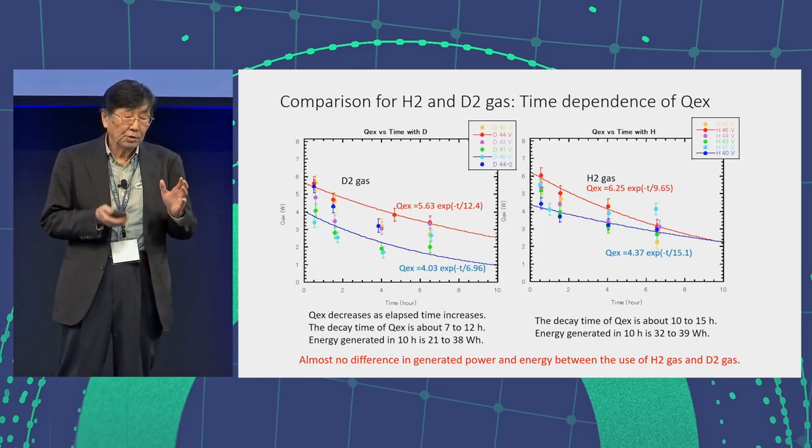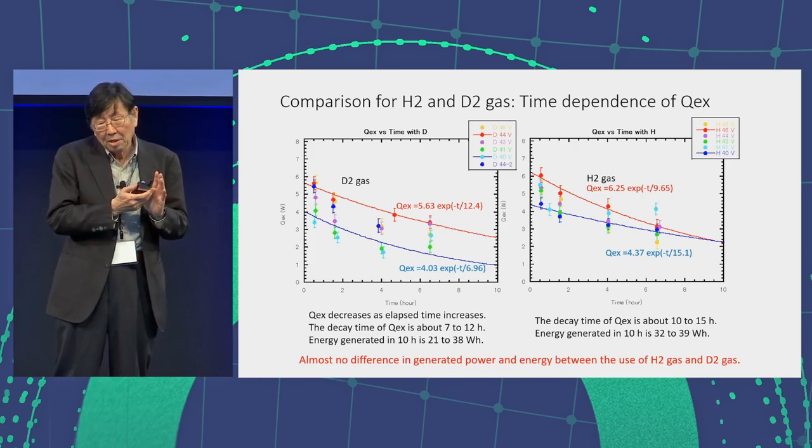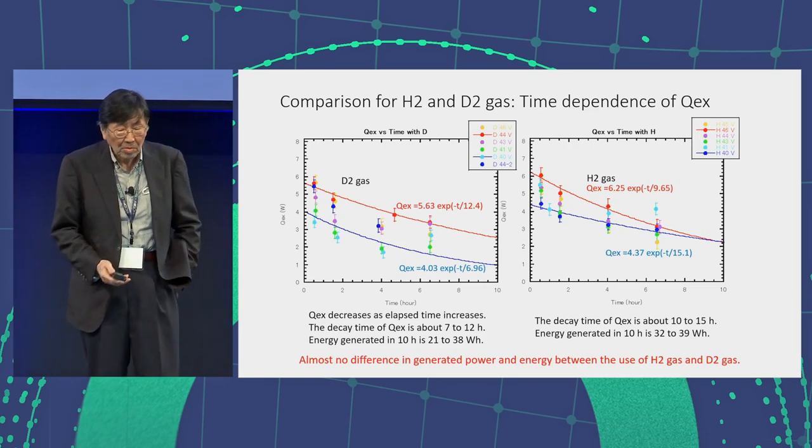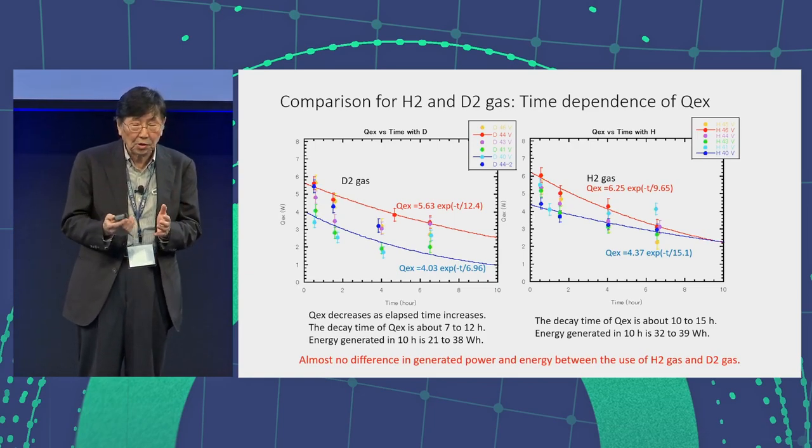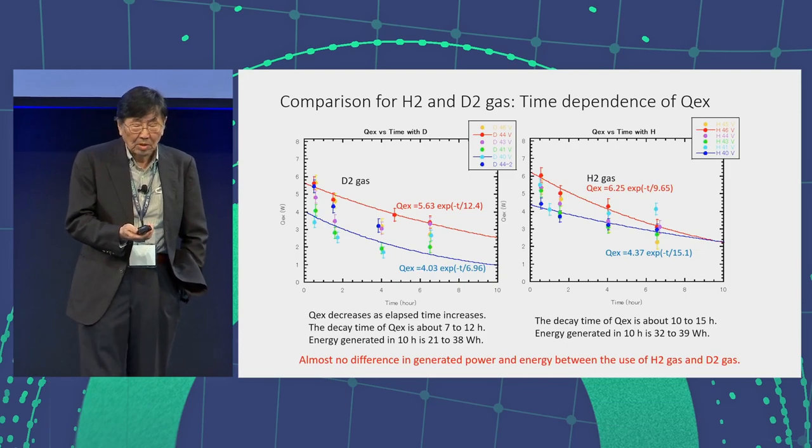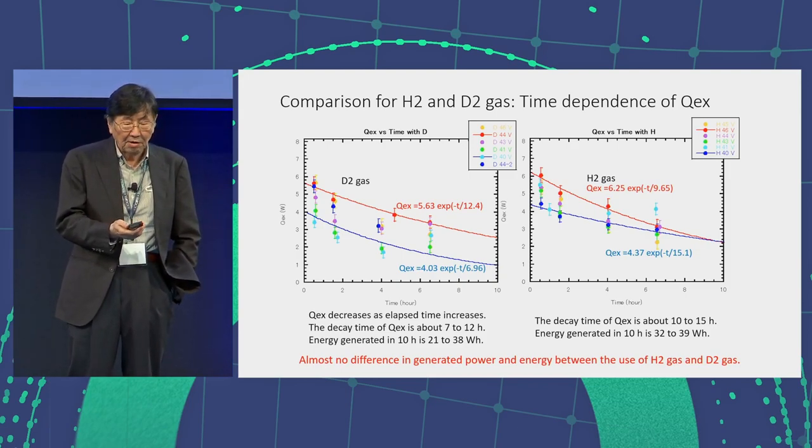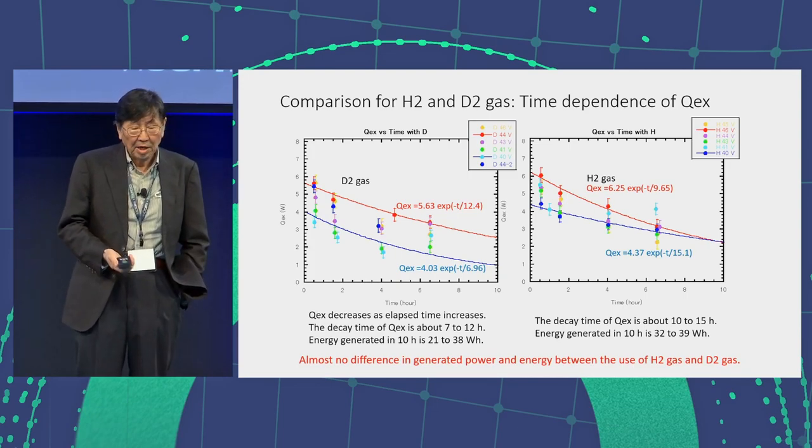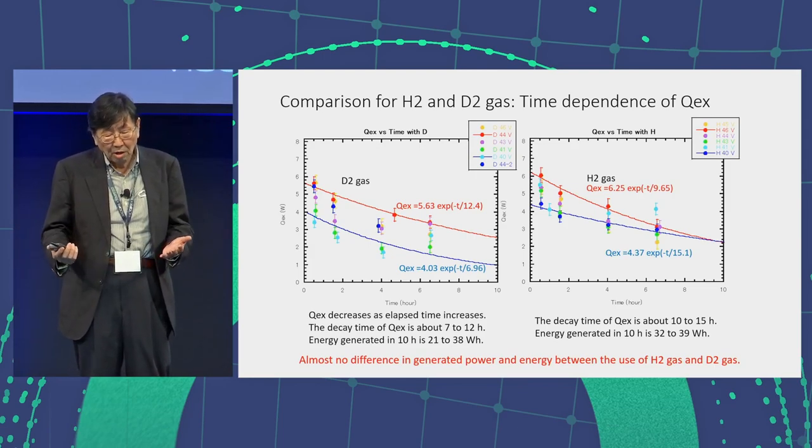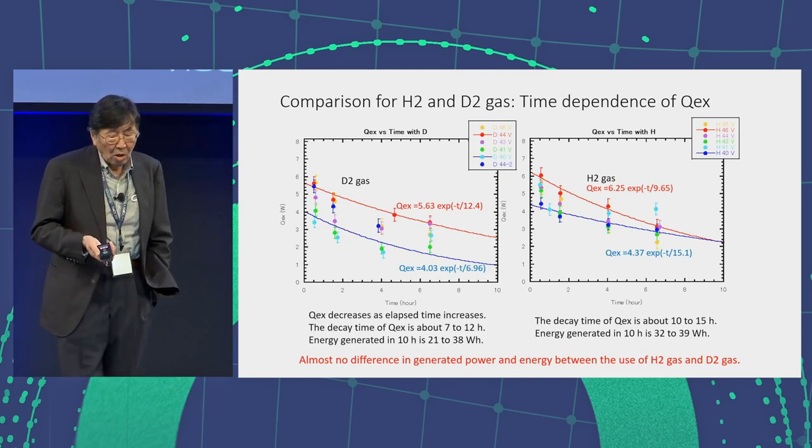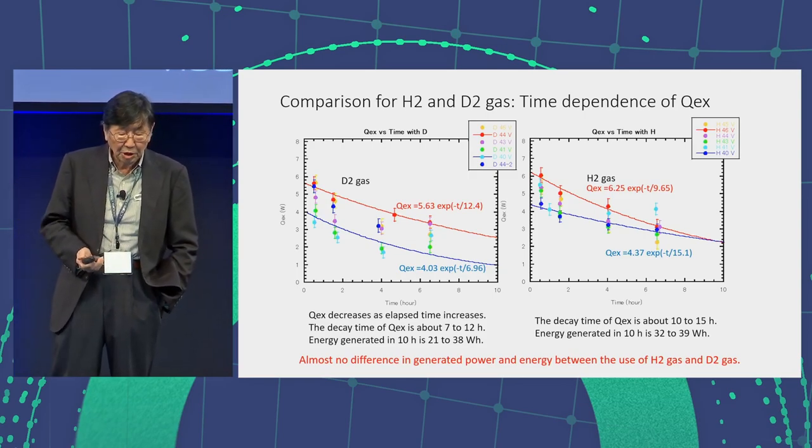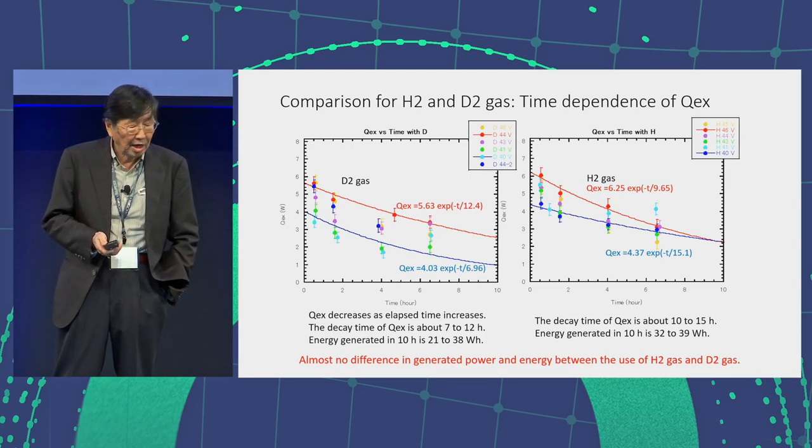Of course, we started the measurement, then the time elapsed, the excess energy decreases. This figure shows the behavior of that. The left side is the excess energy as a function of elapsed time. On the right side, we show the hydrogen data. Very roughly, we can say almost no difference in generative power and the generative energy between the use of hydrogen and the deuterium.